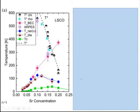Let us see how things look in the phase diagram, starting with LSCO. The T* line is from NMR and normal-state conductivity. The Nernst effect onset temperature and diamagnetism onset temperature are shown, along with TC. We measured superfluid density by μSR and converted it into this hypothetical Bose-Einstein condensation temperature — shown as the pink star. In the very underdoped region, the pink star line overlaps with the Nernst onset.